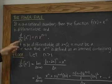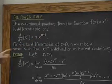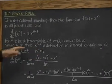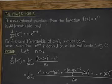You bring the exponent down, and the new power is n minus 1. You have to make sure that f is differentiable at 0, which would require that x^(n-1) is defined on an interval containing 0.